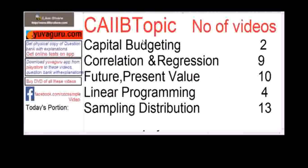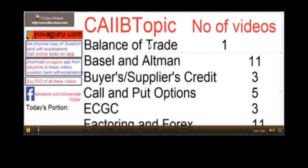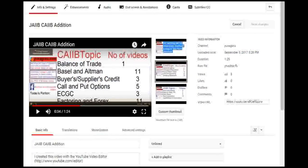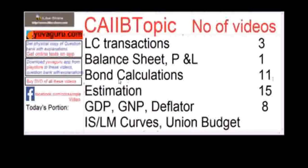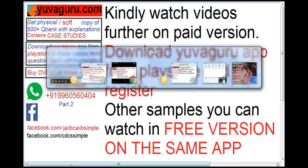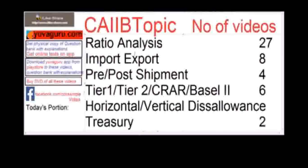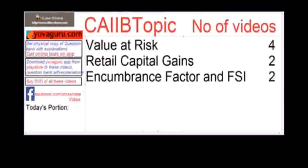For CIB, the available topics include: Capital Budgeting, Correlation, Future and Present Values, Linear Programming, Sampling Distribution, Balance of Trade, Ultimate Score, Buyer's Credit, Supplier's Credit, Call and Put Options, ECGC, Factoring, LC Transactions, Balance Sheets, P&L, Bond Calculations, Estimation, GDP, GNP, Deflator, IS-LM Curves, Union Budget, Keen's Theory, Ratio Analysis, Import-Export, Pre-Import Shipment, Tier 1 and Tier 2 Capital, CRAR, Basel Horizontal and Vertical Disallowances, and Value at Risk.